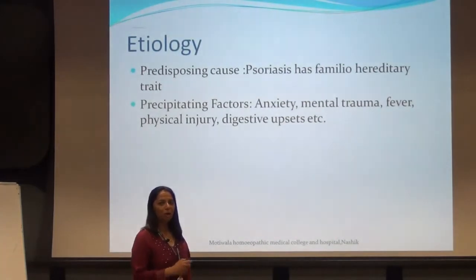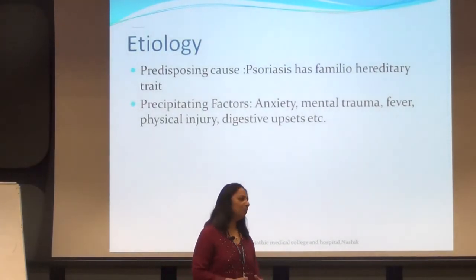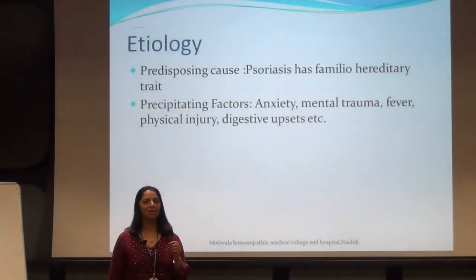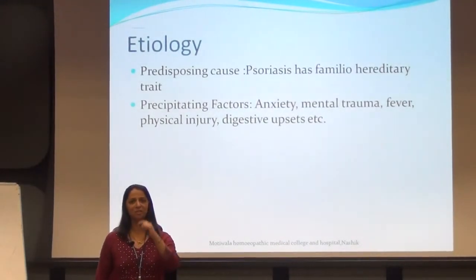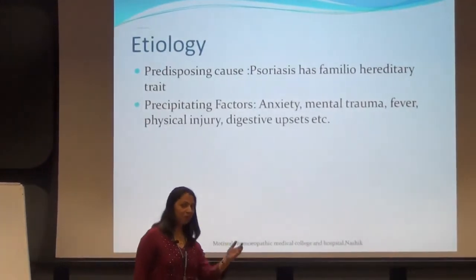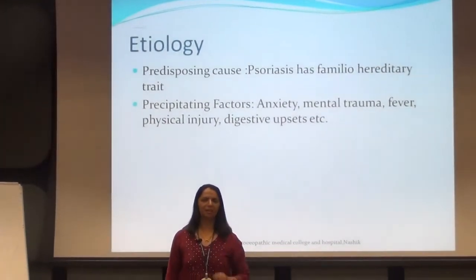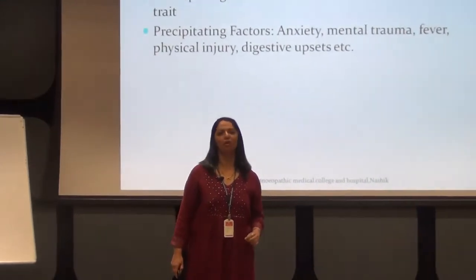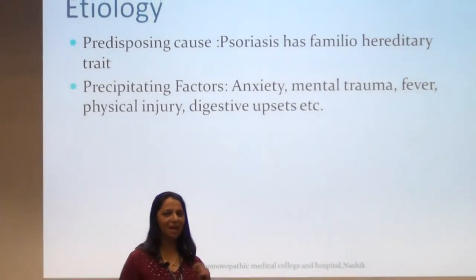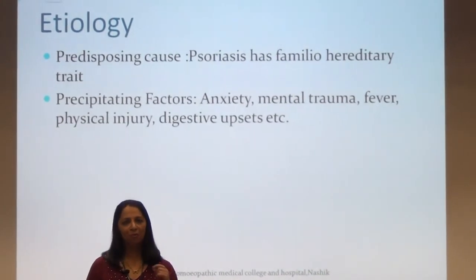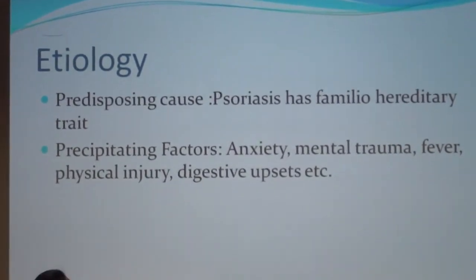The cause of psoriasis is not clearly understood. It has been postulated that psoriasis has a familial hereditary trait. If one parent suffers from psoriasis, there is a 30 percent chance that the offspring will have psoriasis, and if both parents suffer from it, there is a 60 percent chance. Precipitating factors include anxiety, mental stress, trauma, fevers, and digestive upsets.